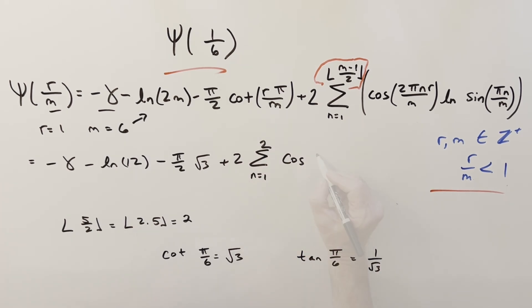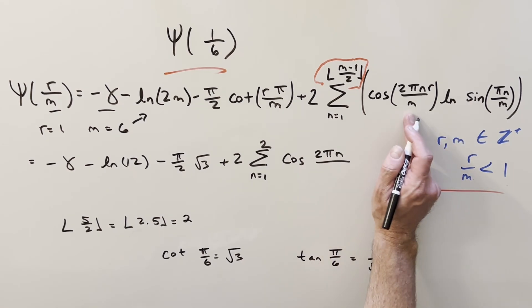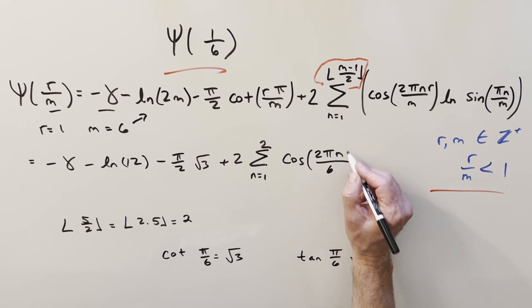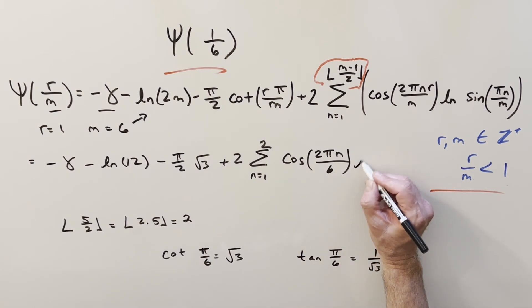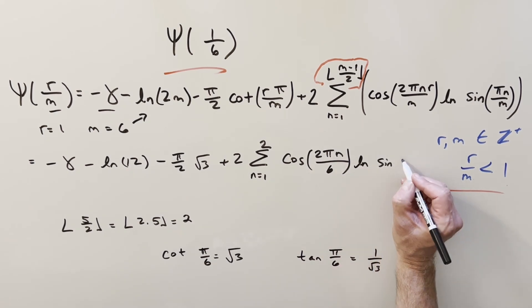Then we have cosine 2 pi n. I'm going to leave it unreduced for the moment. So r is going to be 1. We'll leave that off. And we have this m. So we'll have a 6 in the denominator here. And then we have natural log sine pi n over our m value, which is just 6.